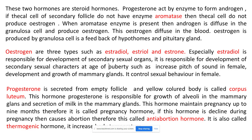The second hormone is progesterone. Ovulation occurs on day 14 of the menstrual cycle, during which the ovum is released by rupturing of the Graafian follicle (mature follicle). After the ovum is released, the empty shell that remains is a yellow-colored body called the corpus luteum.